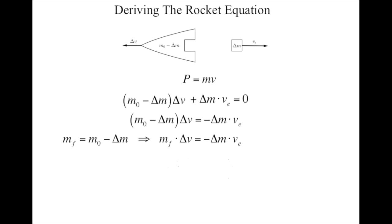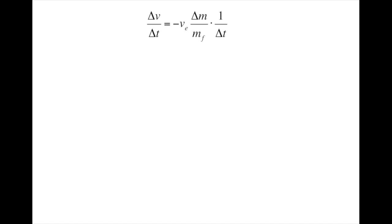Let's get the time interval involved by dividing both sides of the equation by delta T. I'll then divide the MF over to the other side, as it's the delta V over delta T that I really want to concentrate on. You may notice that I did some reshuffling of the terms on the right side of the equal sign. Why I did this will become apparent in a moment.